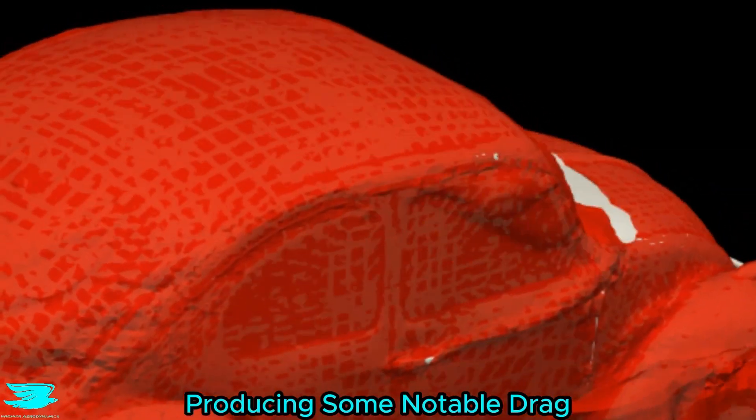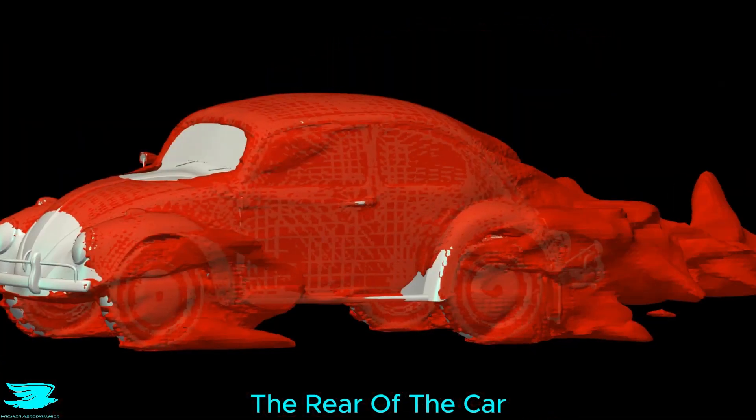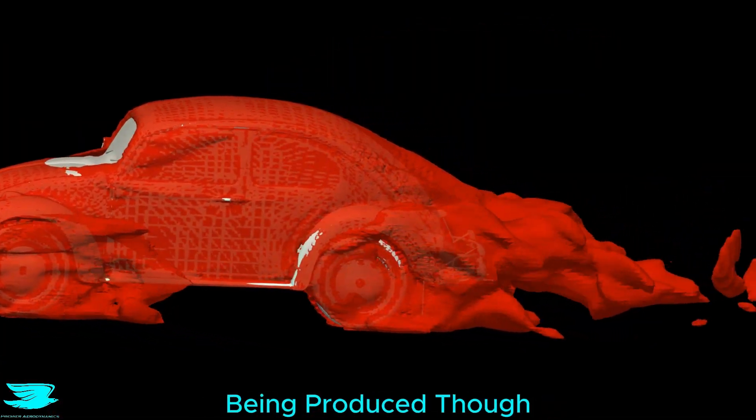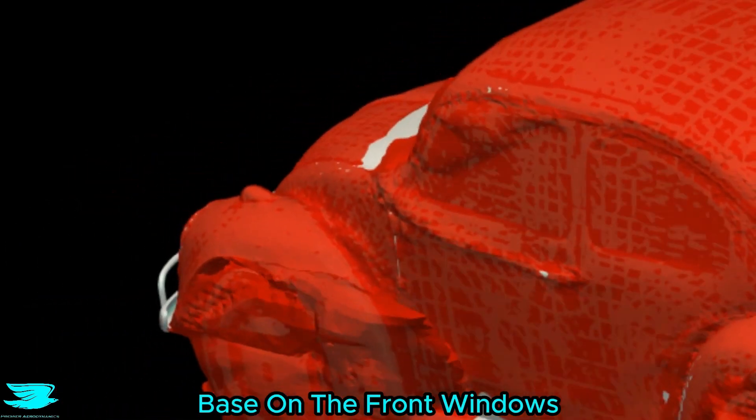The A pillars are also producing some notable drag, and the C pillars are too, which is because of the vortices they create. The rear of the car is where most of the drag is being produced though, as expected, and there is also some drag being formed around the front of the windshield that then rolls around the base of the front windows.